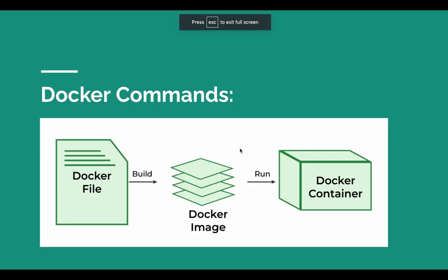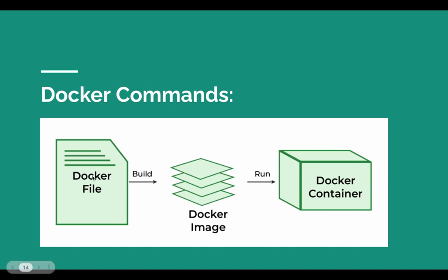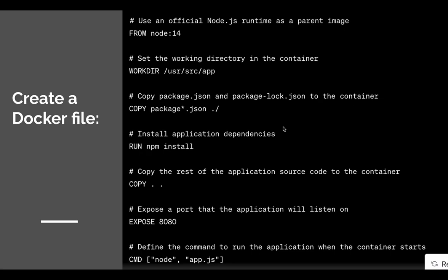Let's move back to the slides to see the Docker components part that we have already discussed. Till now you know what Dockerfiles are, how you can build Docker images, and what Docker containers are. This is how a Dockerfile looks — you can specify any number of commands, like specifying the base Docker image, installing application dependencies, exposing any port, or running any command or file.